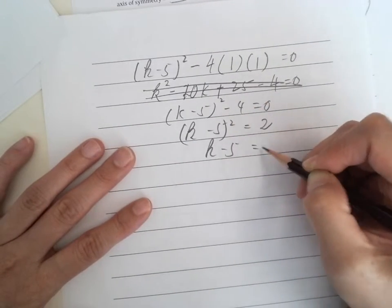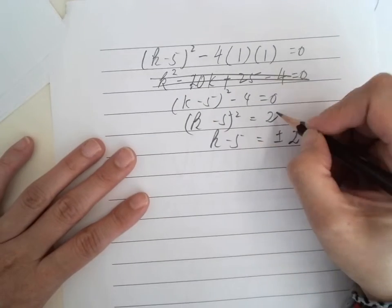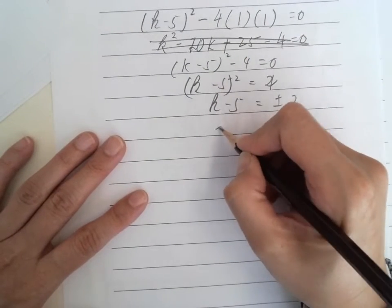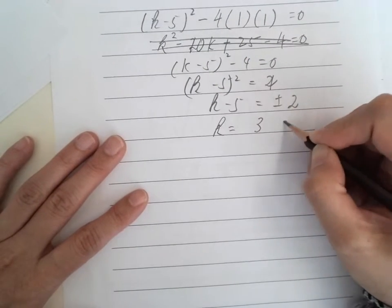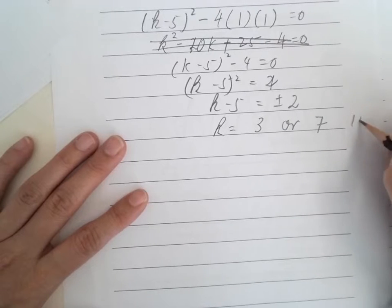K minus 5 equals to plus or minus square root of 2. Alright, and so, K should be equals to 3 or 7. Nice and easy.